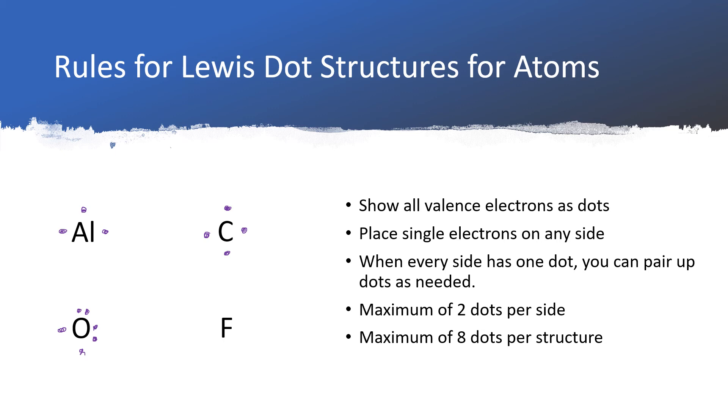For our last example, let's look at fluorine. It's in group number 17, so it has seven valence electrons. So if we draw these in, we'll have one, two, three, four, five, six, seven. So fluorine will have three pairs and one single electron.